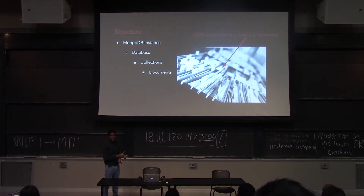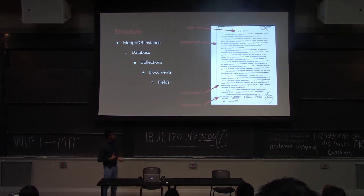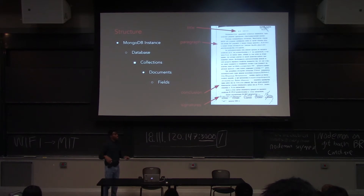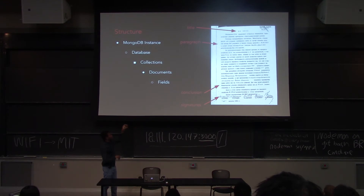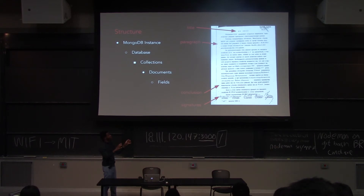Inside of your collection, you have documents. Each document contains things that are similar, though they still have some differences. Finally, each document has fields. In the image shown, one field in a document is the title, another is paragraph, another is conclusion, and there's a signature at the bottom. Each field has a value — whatever it actually is. All the fields in your document have values.